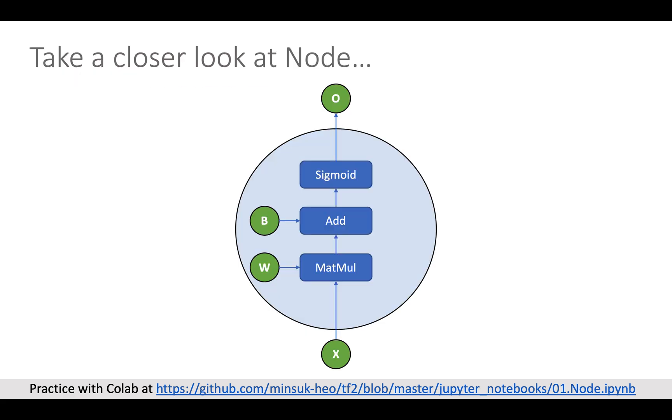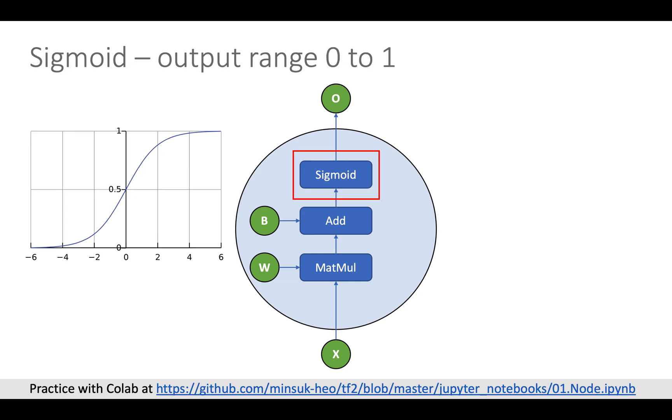Today we will take a closer look at one basic node which is mostly used in deep learning. The node just multiplies input X with its weight and adds bias on it, and then puts the output in the sigmoid to get the final result. Sigmoid is a function which always gives output in range between 0 to 1.